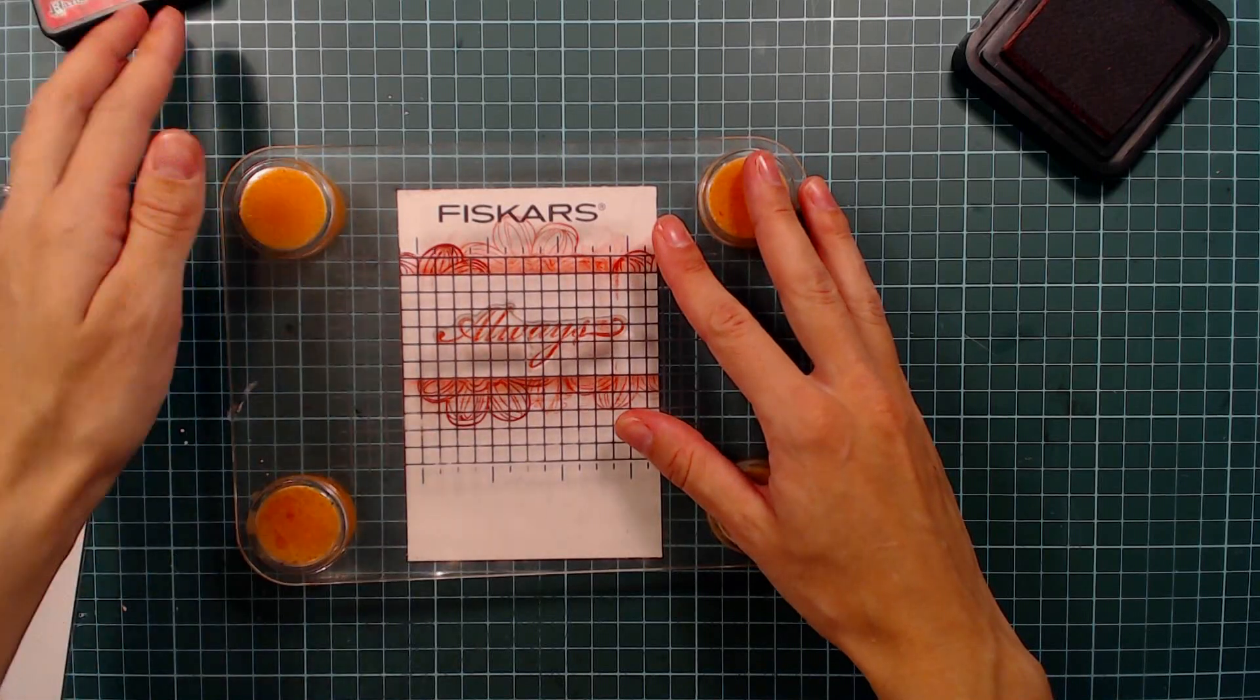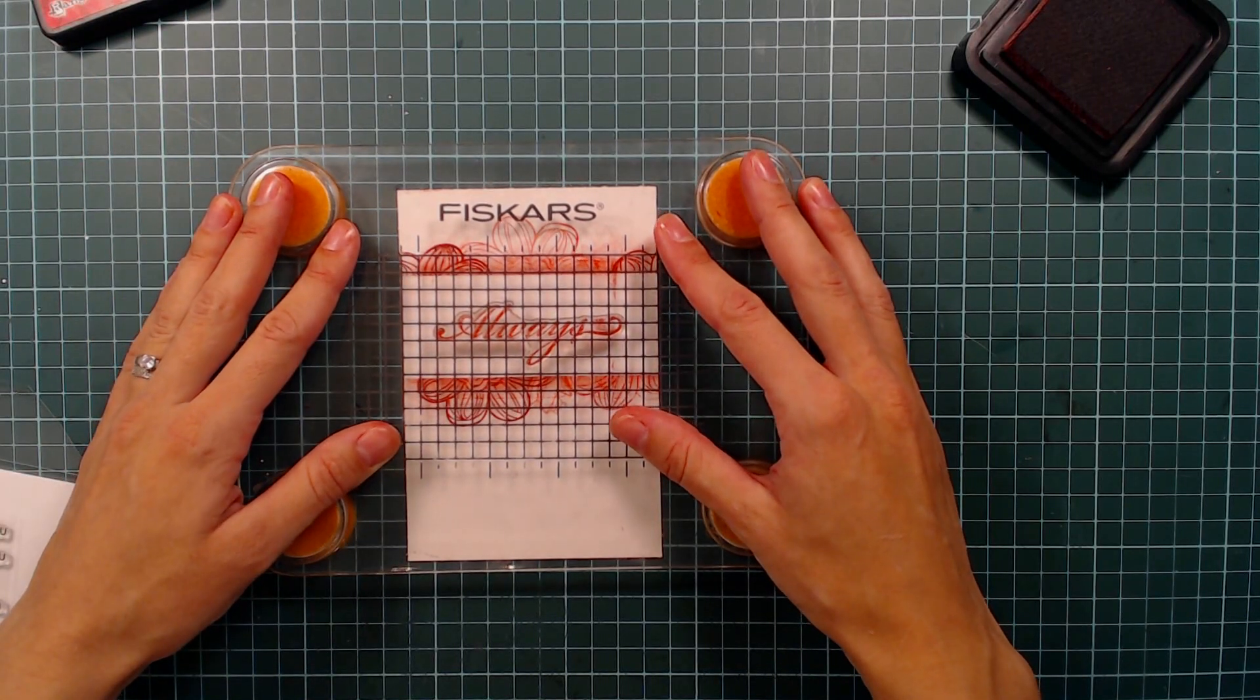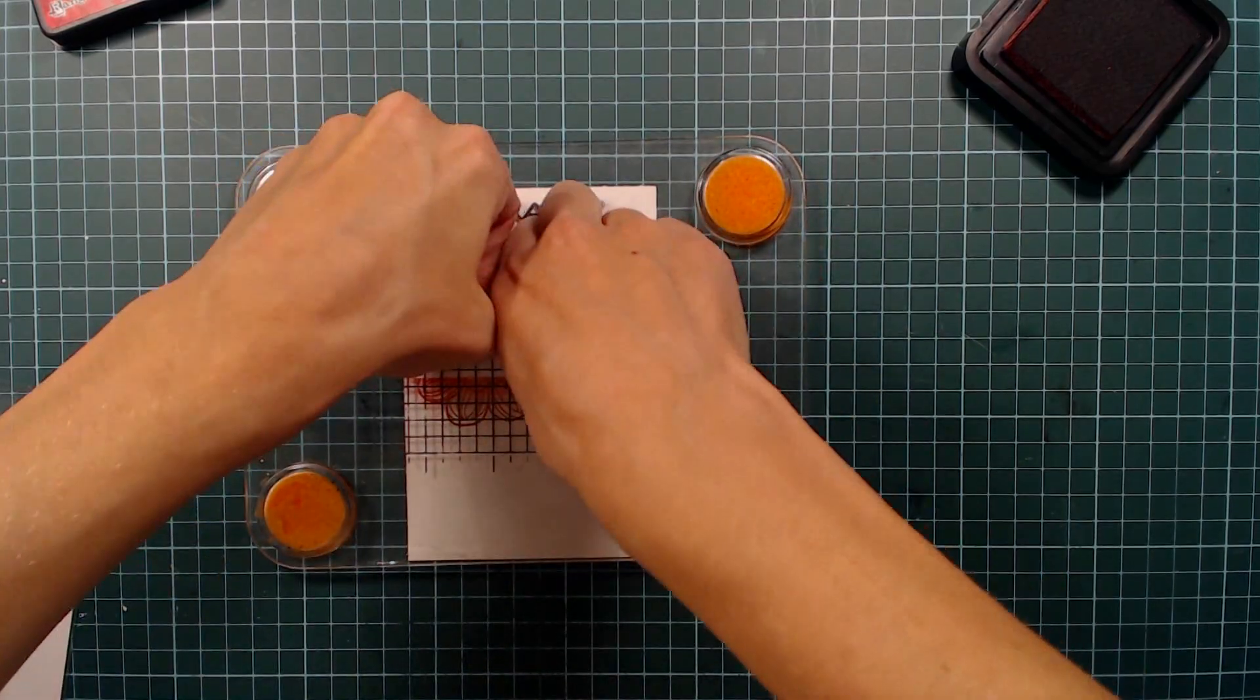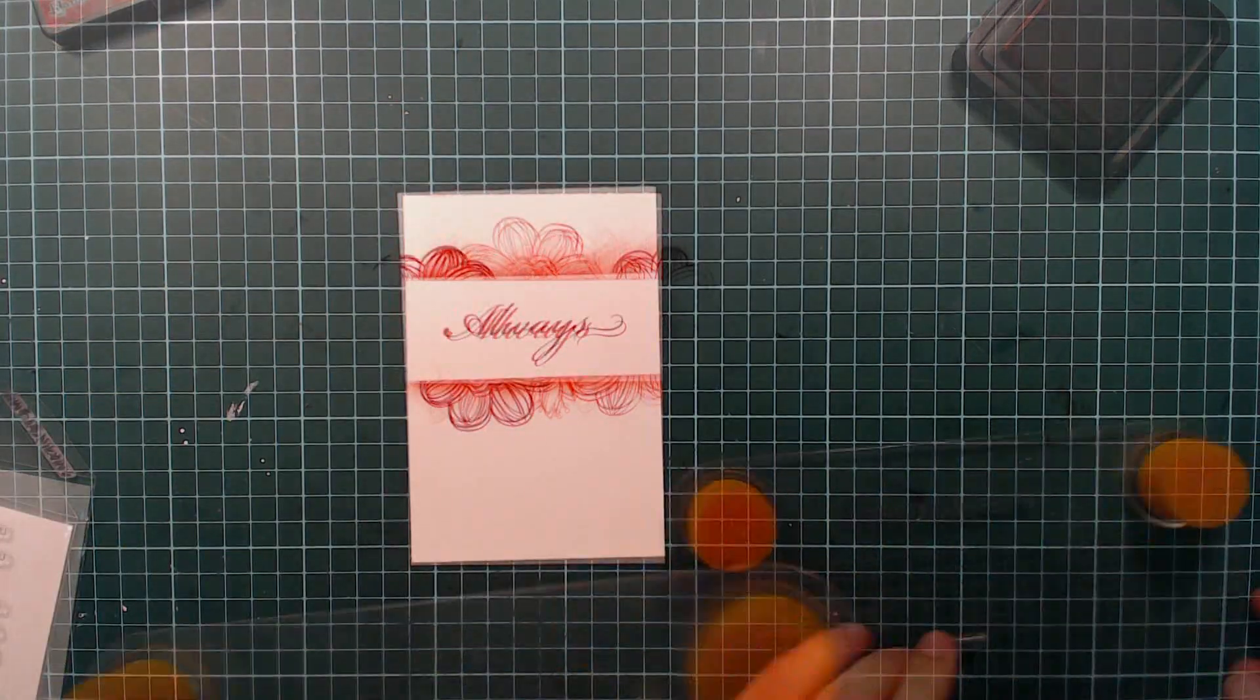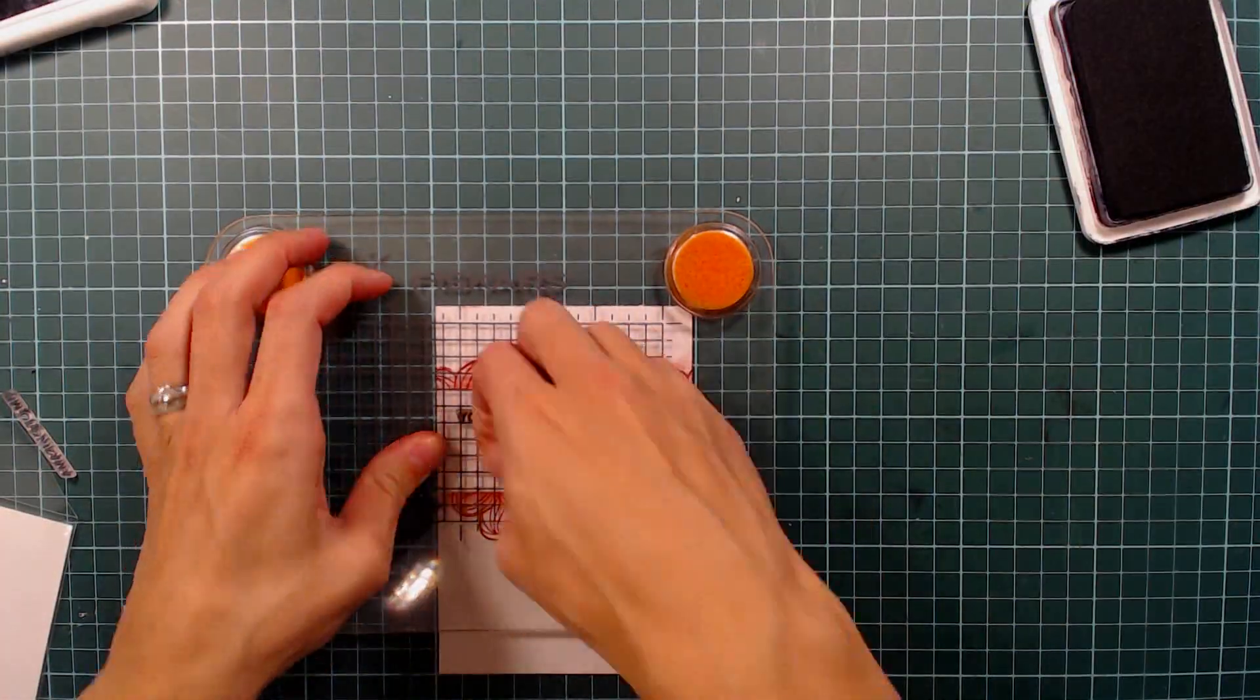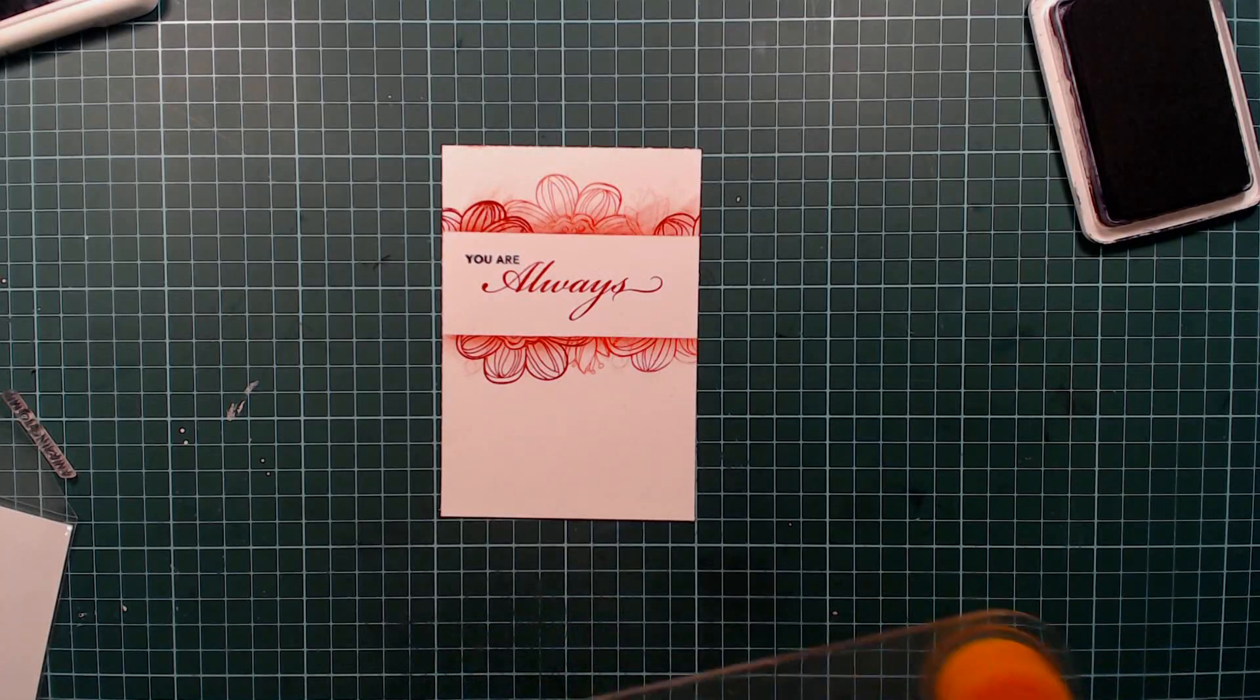And when I have finished stamping the first piece of the sentiment, I am continuing with the rest and I'm stamping those words in Archival Ink in Jet Black. And I'm using the grids on my stamp press to make it easier to get the sentiment straight.